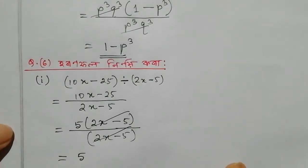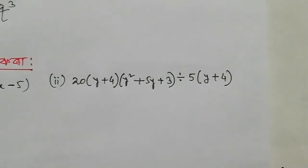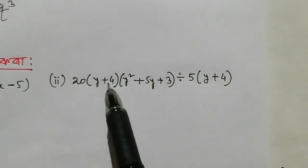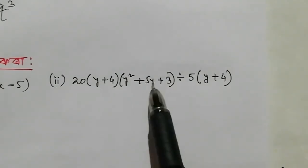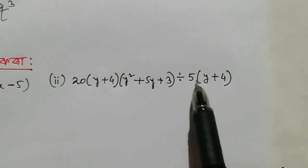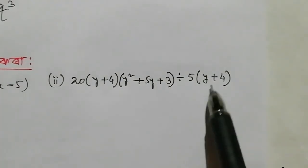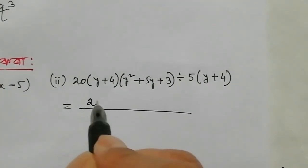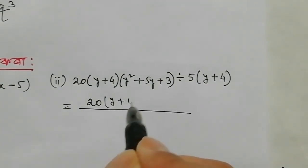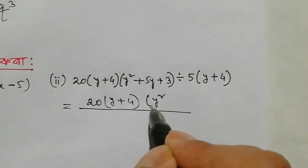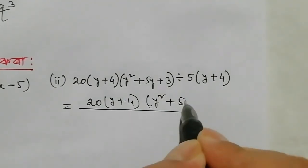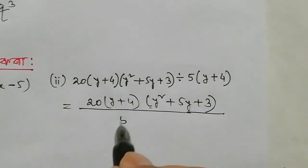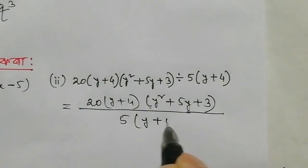So the answer is 5. The expression is 4y squared plus 5y plus 3, divided by 5y plus 4. So the answer: 20y plus 4y squared plus 5y plus 3, divided by 5y plus 4.